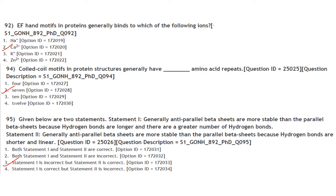Given two statements: Statement 1 — Anti-parallel beta sheets are more stable because hydrogen bonds are longer with a greater number — incorrect. Statement 2 — Anti-parallel beta sheets are more stable because hydrogen bonds are shorter and linear — correct. Statement 1 is incorrect but statement 2 is correct. Answer is option 3.